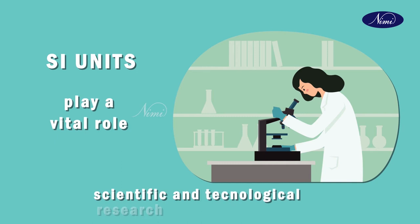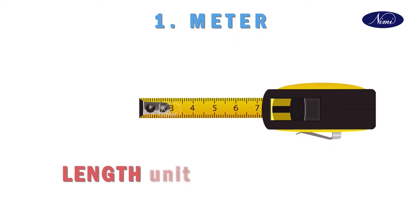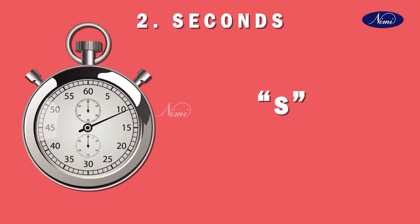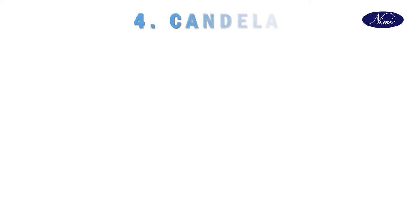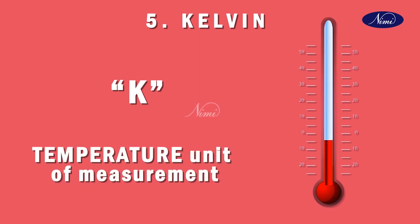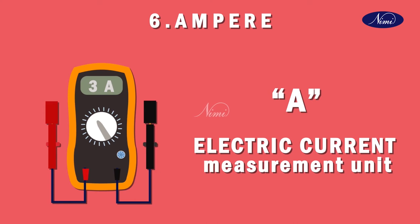SI units play a vital role in scientific and technological research and development. The SI units are made up of some base units. Number one: meter — symbol M, the length unit of measurement. Number two: second — symbol S, the time unit of measurement. Number three: kilogram — symbol Kg, the mass unit of measurement. Number four: candela — symbol Cd, the luminous intensity unit of measurement. Number five: Kelvin — symbol K, the temperature unit of measurement. Number six: ampere — symbol A, the electric current measurement unit.